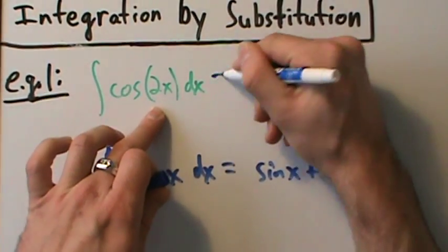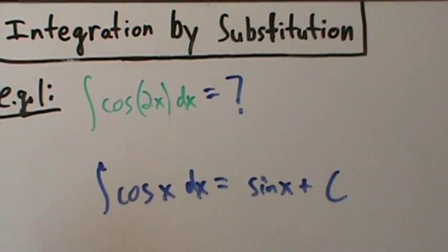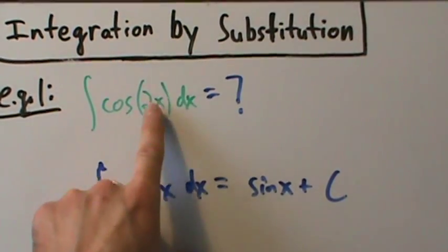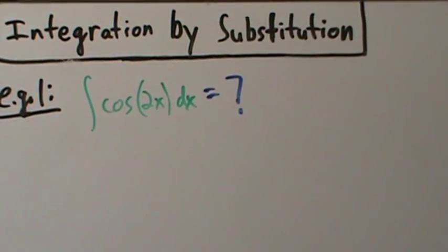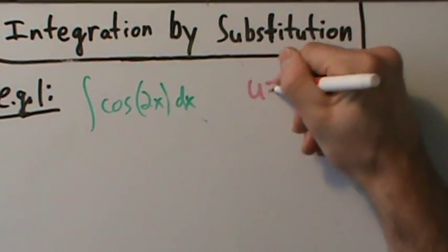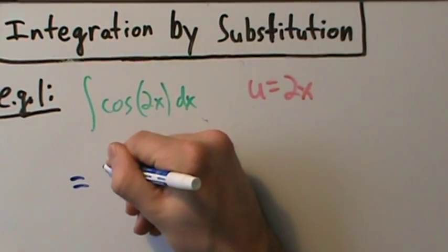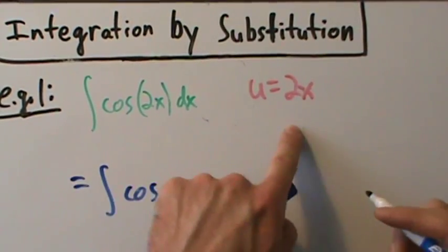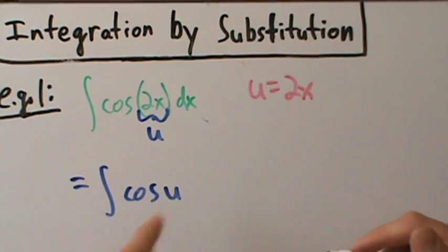This 2 kind of ruins that for us — it makes things a bit complicated. We know if the 2 wasn't there, everything would be okay. So let me take this entire expression 2x and call it something simpler. I'm going to make a substitution: let u equal 2x. Now the integral becomes the integral of cosine of u. So the 2x is now u, but I still have a dx there.